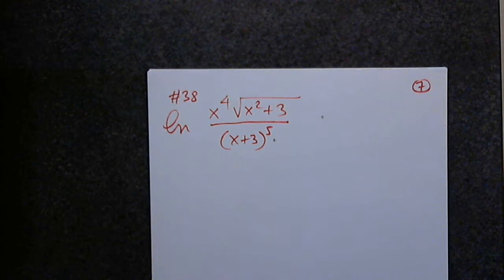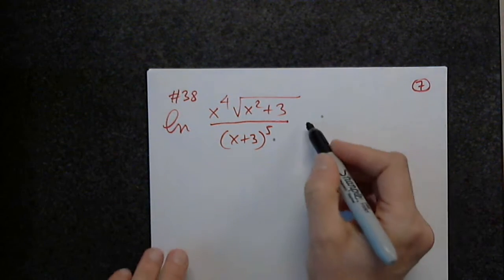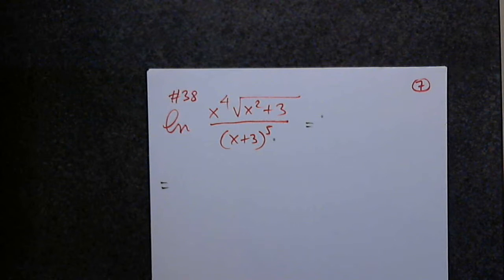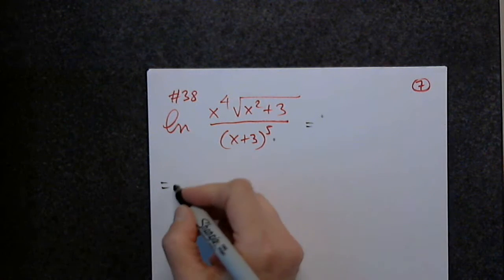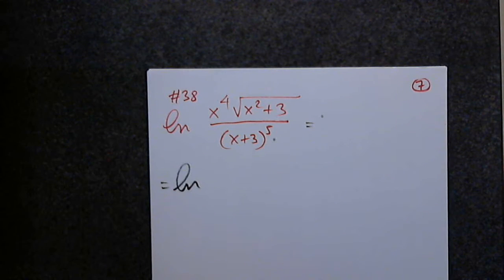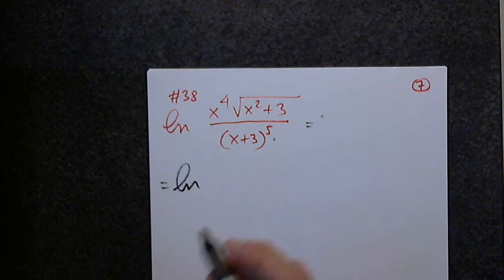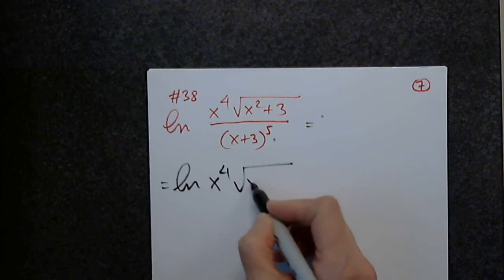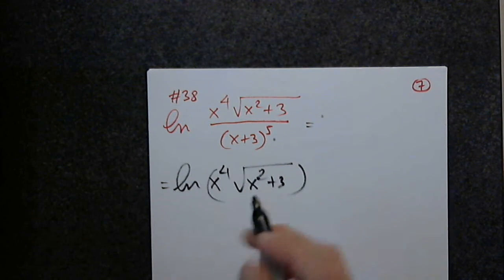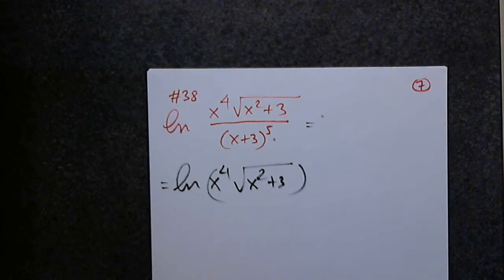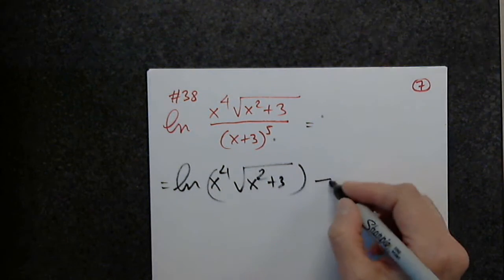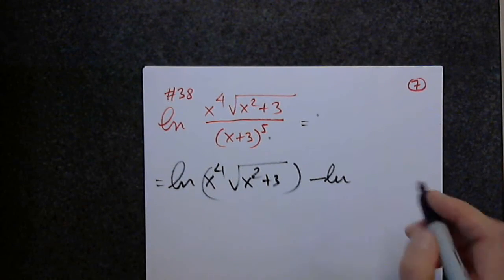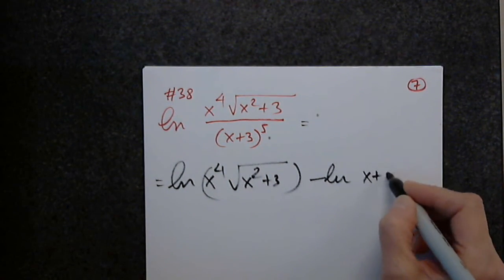Where do we start? Can anyone dictate? Ln, natural log, very good, of x to the fourth, the square root of x squared plus three. Excellent. Minus Ln, natural log.